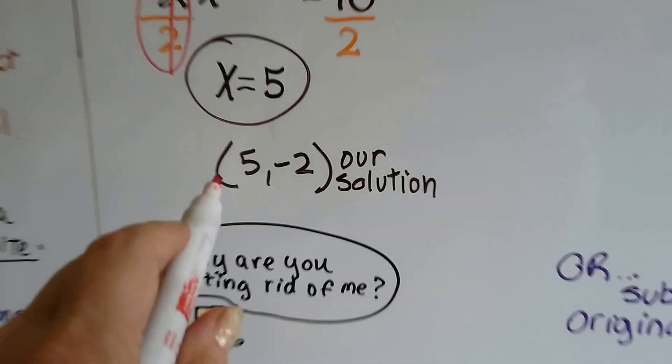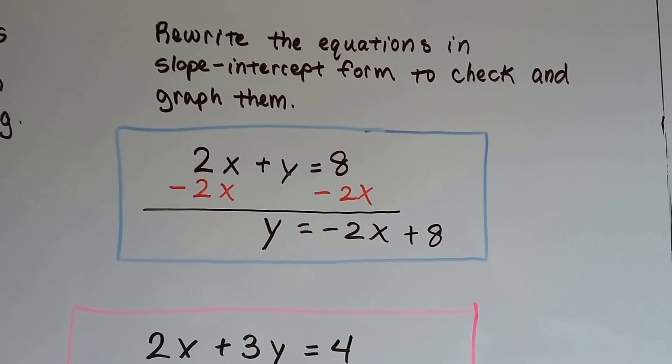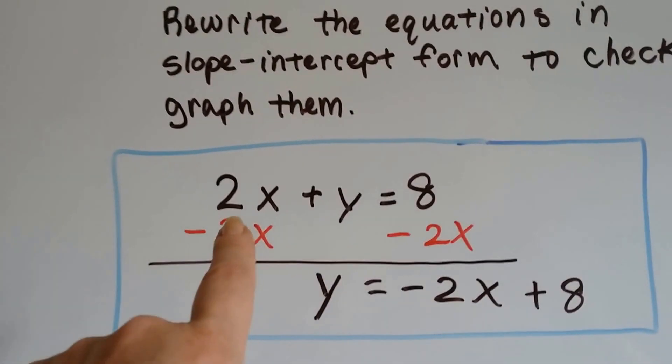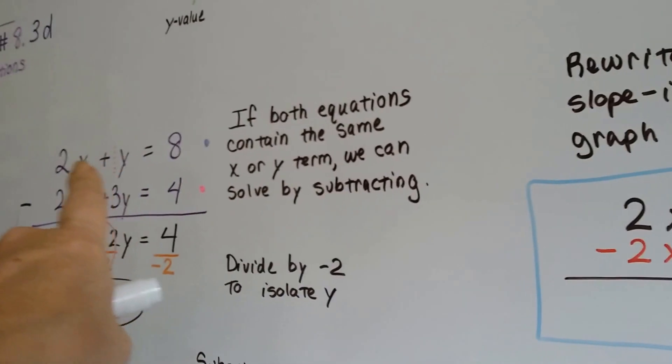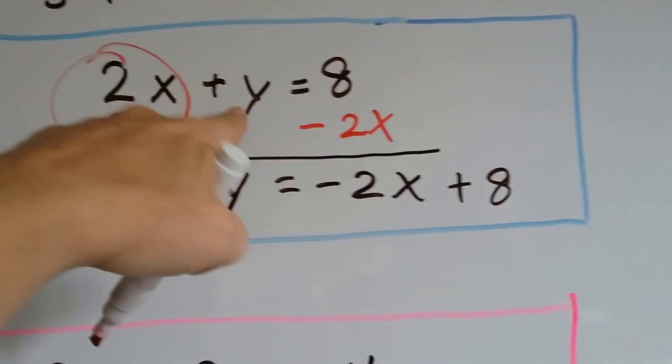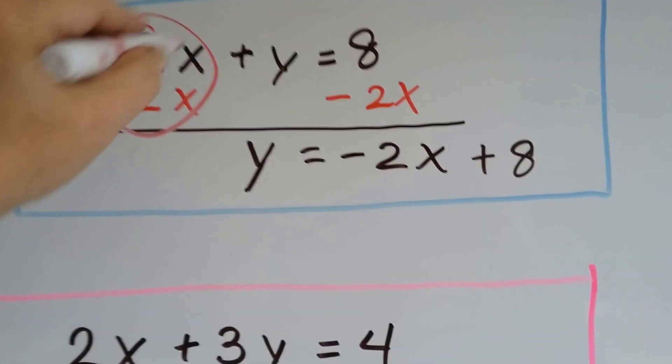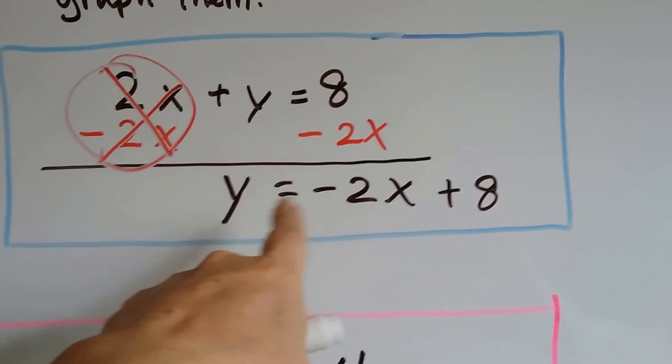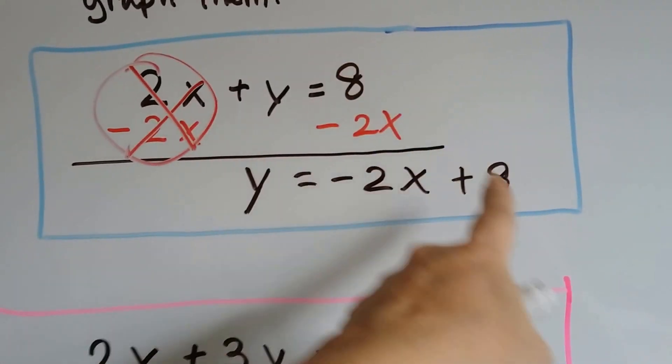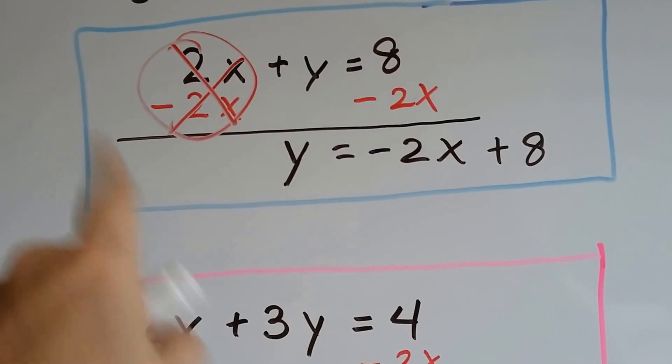So now we know that x equals 5 and y equals negative 2. So that's our solution, 5 comma negative 2. So we rewrite those two equations in slope intercept form so that we can check them and graph them. The first equation was 2x plus y equals 8. And we're going to subtract 2x from each side so that we can get this y up in the front by itself like it's supposed to be in slope intercept form. So now we put the negative 2x first because that's the slope and the x value, and the plus 8 in the back because that's the y intercept b. So now it's in slope intercept form and that's going to be the blue line.